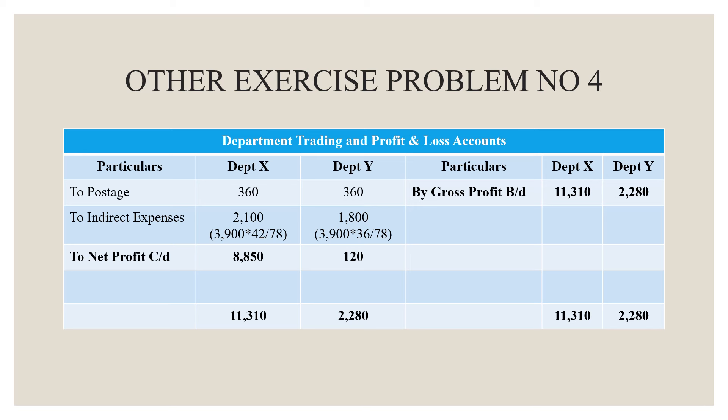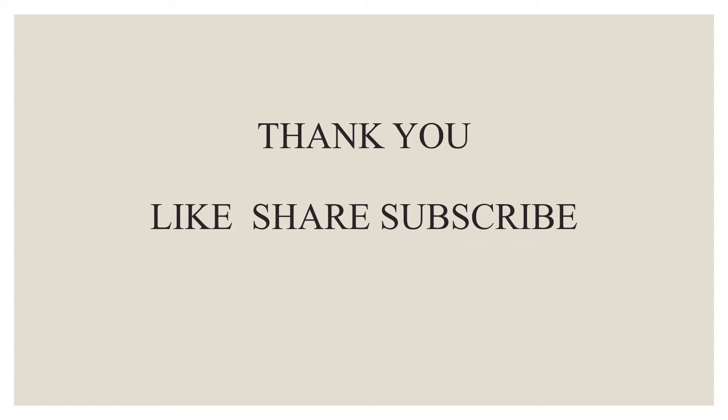Now, totaling both sides of the Profit and Loss Account, we get a debit balance as net profit for both departments. The net profit for Department X is 8,850 rupees and for Department Y is 120 rupees. The grand total on both sides is 11,310 for Department X and 2,280 for Department Y.